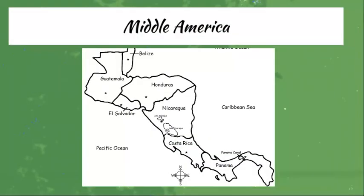Moving on to Unit 3, we'll be focusing on Middle America — the geographic realm between the United States and the continent of South America, which consists of three regions: the Caribbean, Mexico, and the Central American Republics. The Central American Republics refer to the seven states that are south of Mexico.